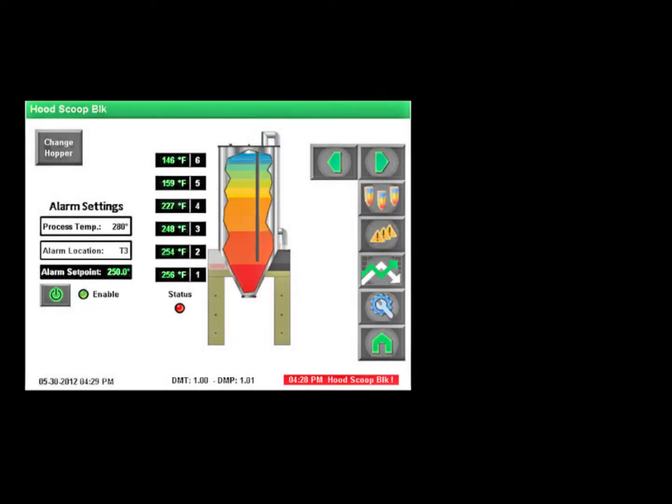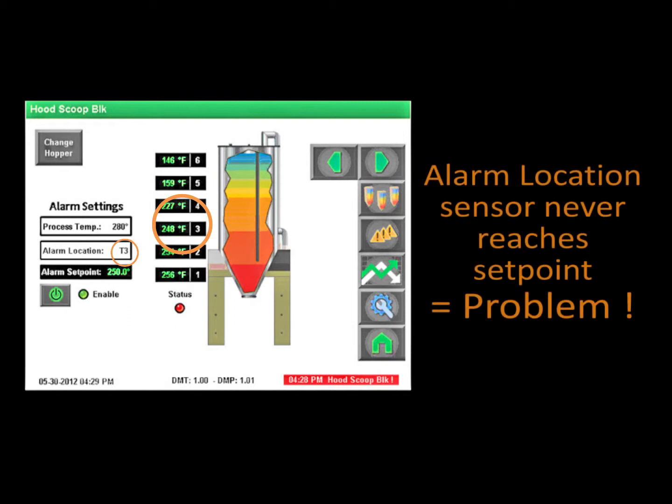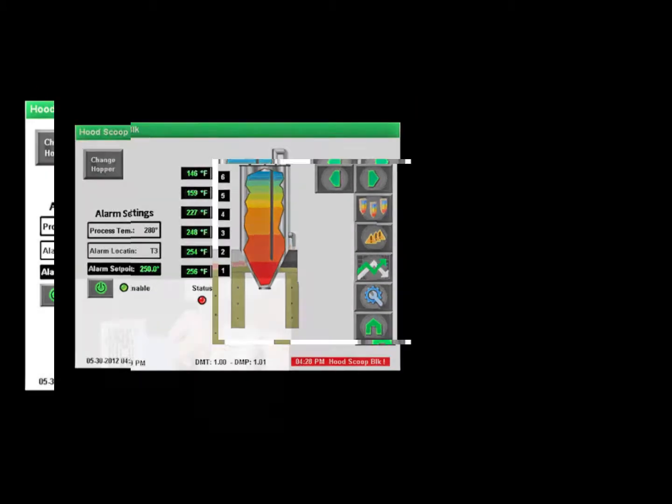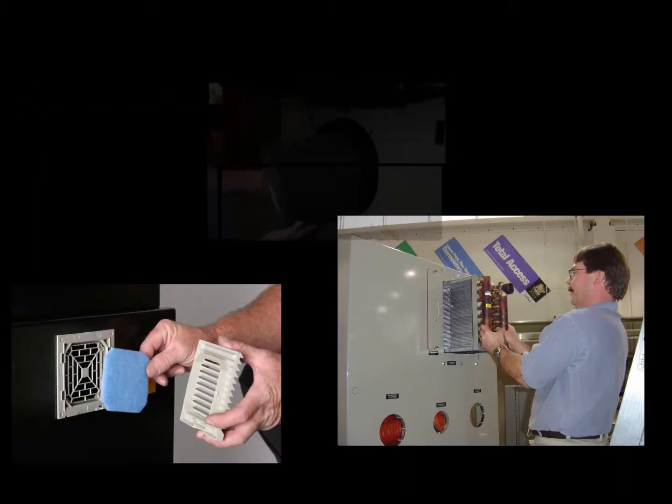Now, if the alarm location sensor never reaches the drying temperature set point, this will be your first indication that there is a problem with your drying system and it should be examined for proper operation before proceeding.